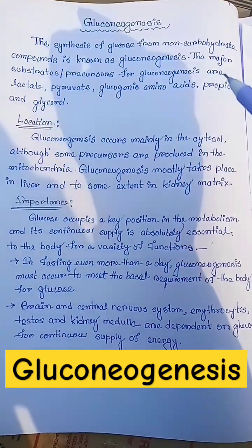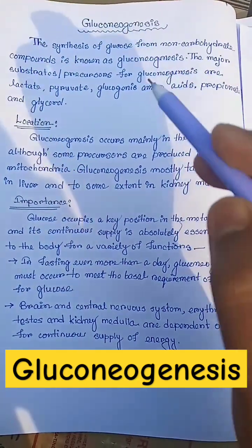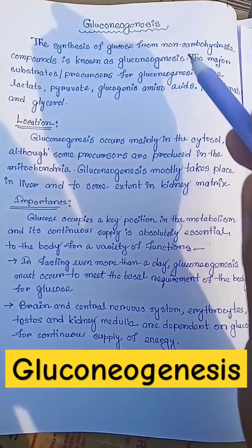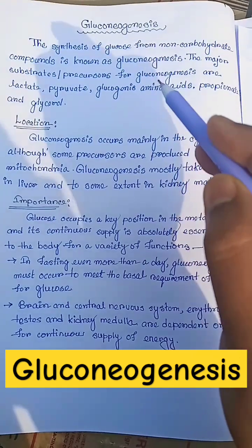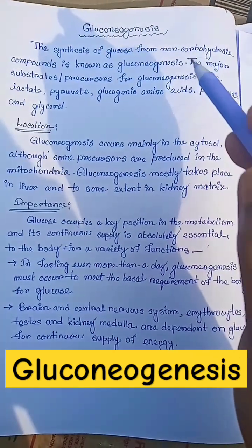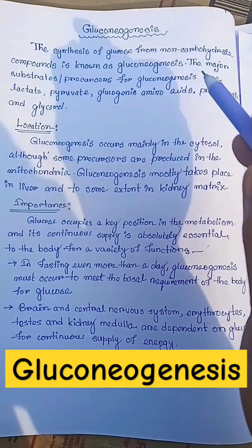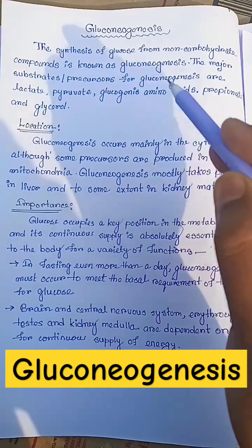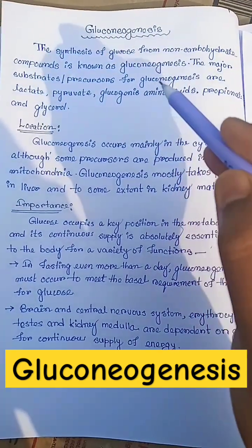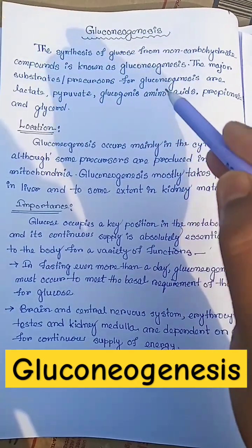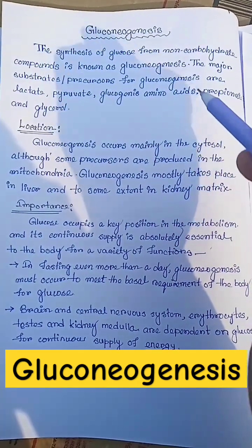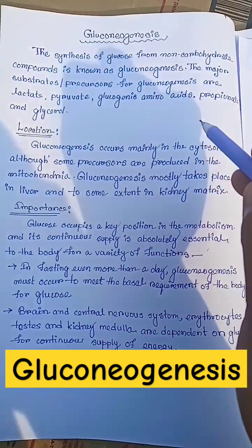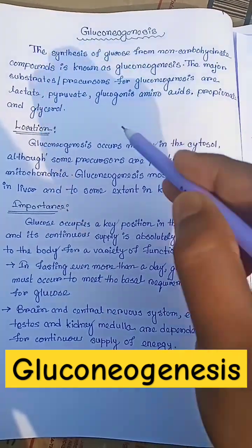Gluconeogenesis is a biochemical process where the synthesis of glucose occurs from non-carbohydrate compounds. The major substrates or precursors for gluconeogenesis are lactate, pyruvate, glucogenic amino acids, propionate, and glycerol.